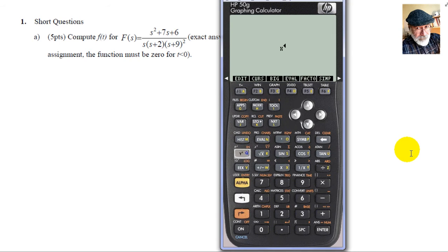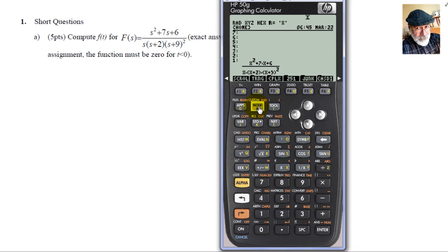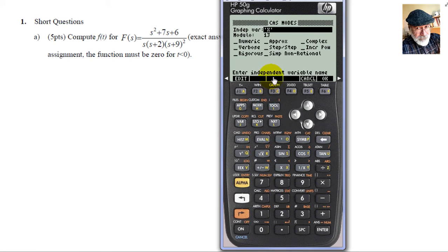And now we type that function of s, but using x in lieu of s, and making sure we do not miss any multiplication operator between any two parentheses or any coefficient and letter x. At the end of that, we'll ensure that all the radio buttons in the Mode CAS submenu are cleared.